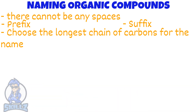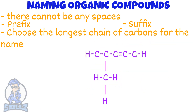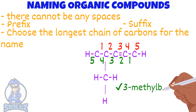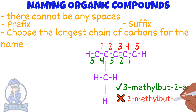Let's change things up a bit. Let's say this was your molecule. If we count from left to right, the branch is at 2 and the double bond at 3. If we count from right to left, the double bond is at 2 and the branch at 3. In these cases, we give priority to the functional group over the branch. So it would be 3-methyl-but-2-ene, and not 2-methyl-but-3-ene.